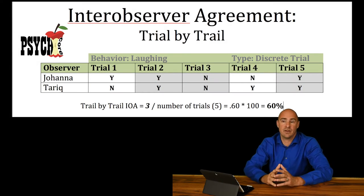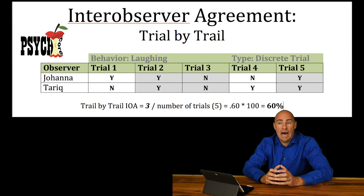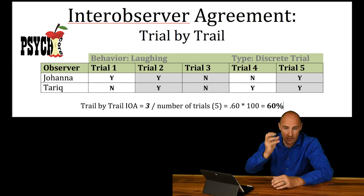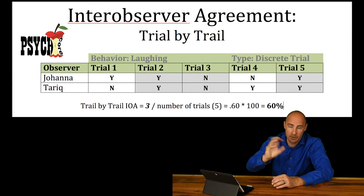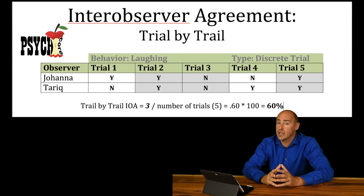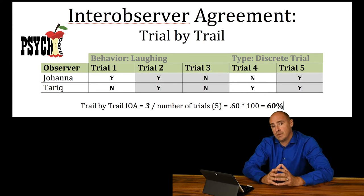Divide the number of agreeing trials or intervals by the number of total intervals that you have, and you end up with a trial by trial IOA — a ratio. Multiply by 100 to get your percentage and you're good. So did Bob see me picking my nose? And did Jim see me picking my nose?